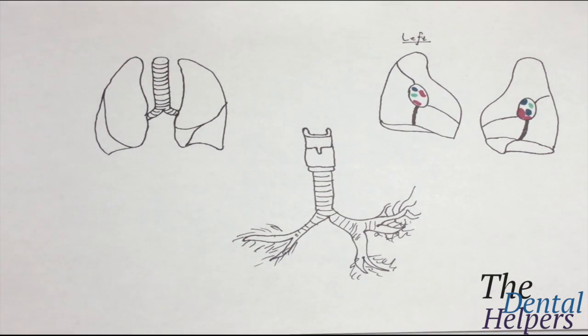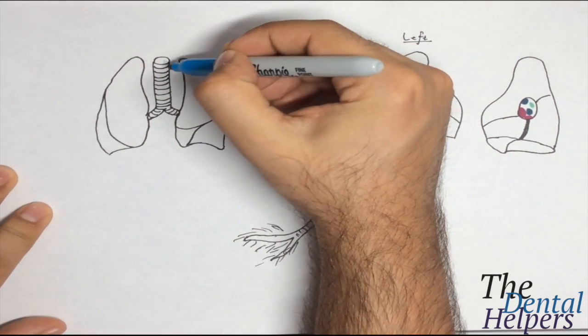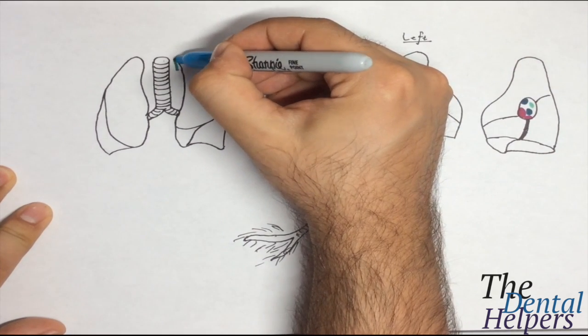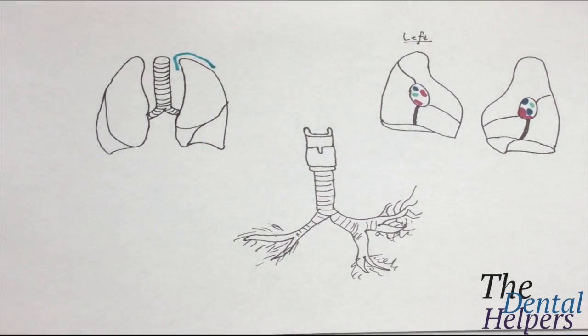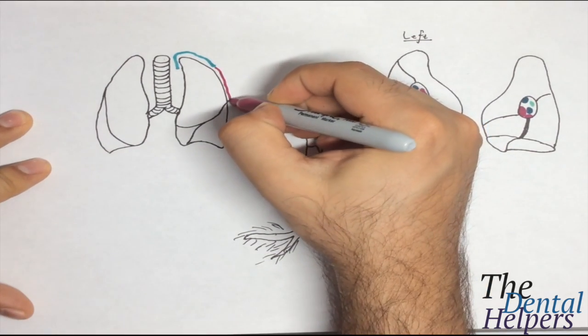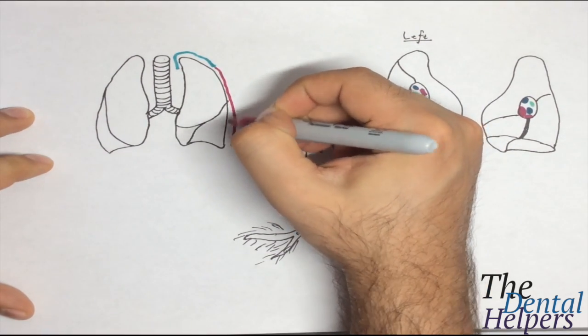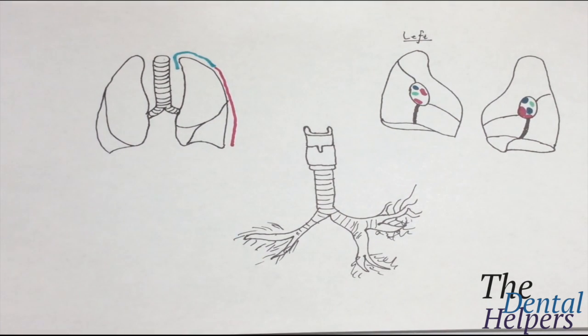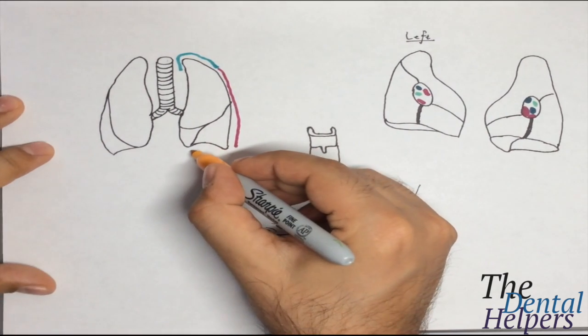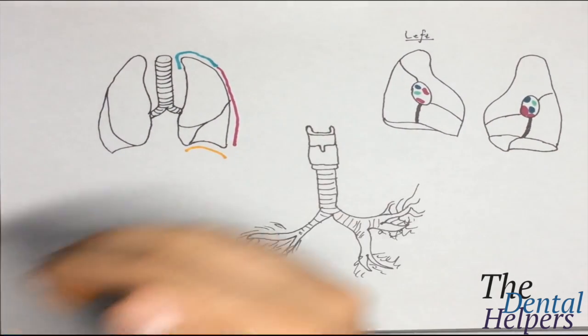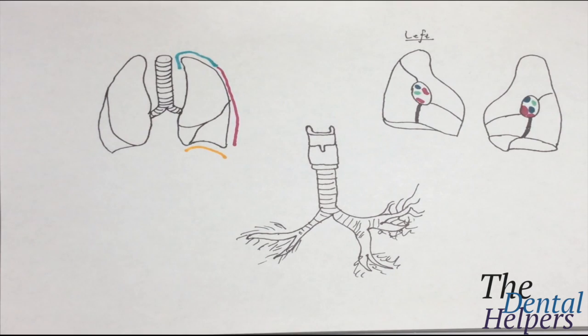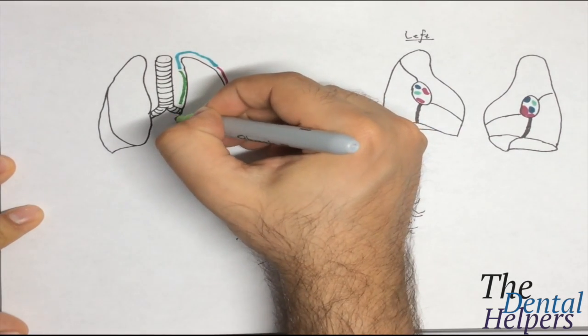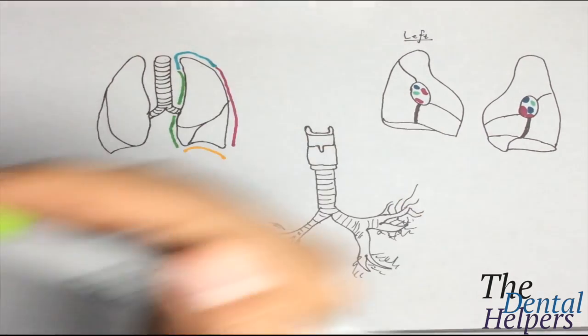The regions of the lungs you need to know: we have the top region which is called the cervical region right here. Then as we continue around the perimeter of the lungs, we have the costal parietal which is right here. At the base of the lung near the diaphragm, this is the diaphragmatic region. Lastly, we have the mediastinal region, which is in the middle.